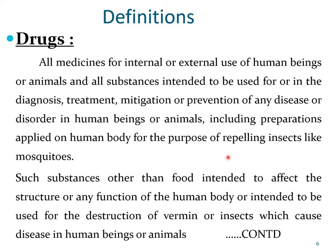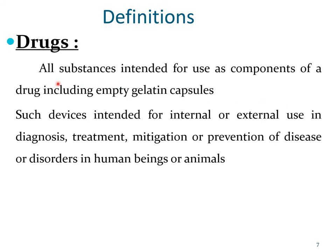The second part of the definition says such substances other than food intended to affect the structure or function of the human body, or intended to be used for the destruction of vermin or insects which cause disease in human beings or animals. The definition further says all substances intended for use as components of a drug, including empty gelatin capsules. The empty gelatin shell of a hard gelatin capsule is also considered to be a drug and falls under the purview of the DNC Act.